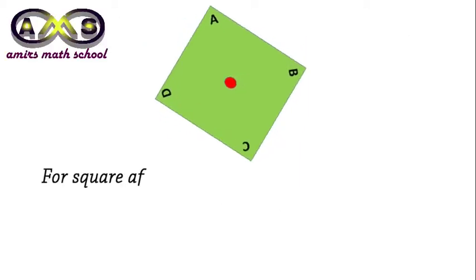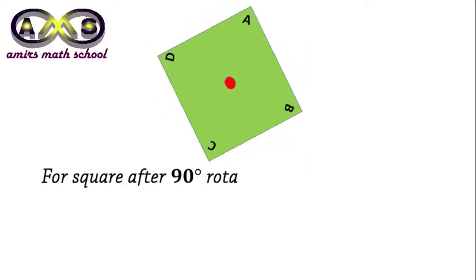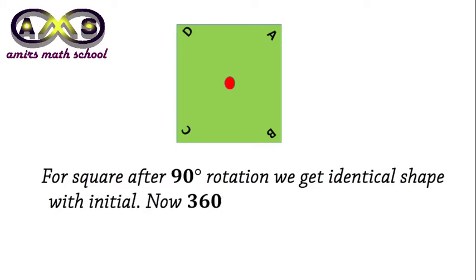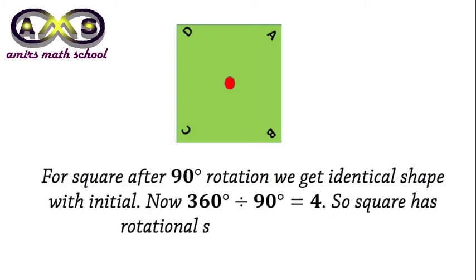For a square, after 90 degree rotation, we get an identical shape with the initial one. Now, 360 divided by 90 equals 4. So, square has rotational symmetry of order 4.